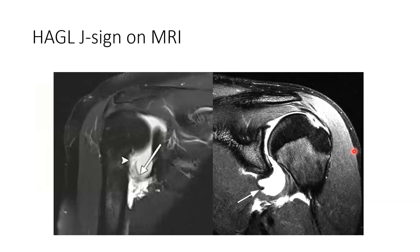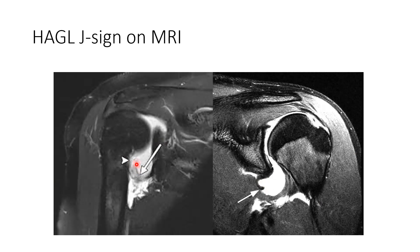The HAGL lesion — humeral avulsion of glenohumeral ligament — means avulsion of the anterior inferior glenohumeral ligament from its attachment to the humerus. On MRI, the ligament is normally U-shaped, but because it avulses from the attachment on the humerus, it becomes J-shaped. That J shape represents the detachment from the humeral side.